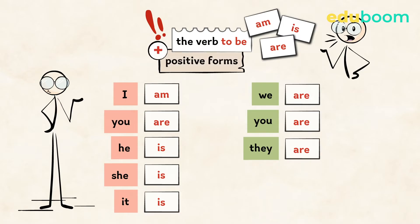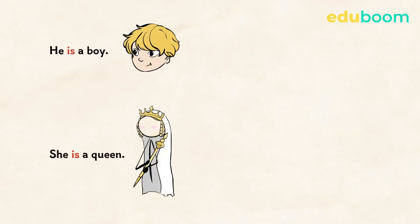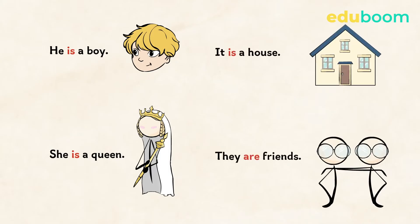These are the positive forms of the verb to be. You can say: he is a boy, she is a queen, it is a house, they are friends.